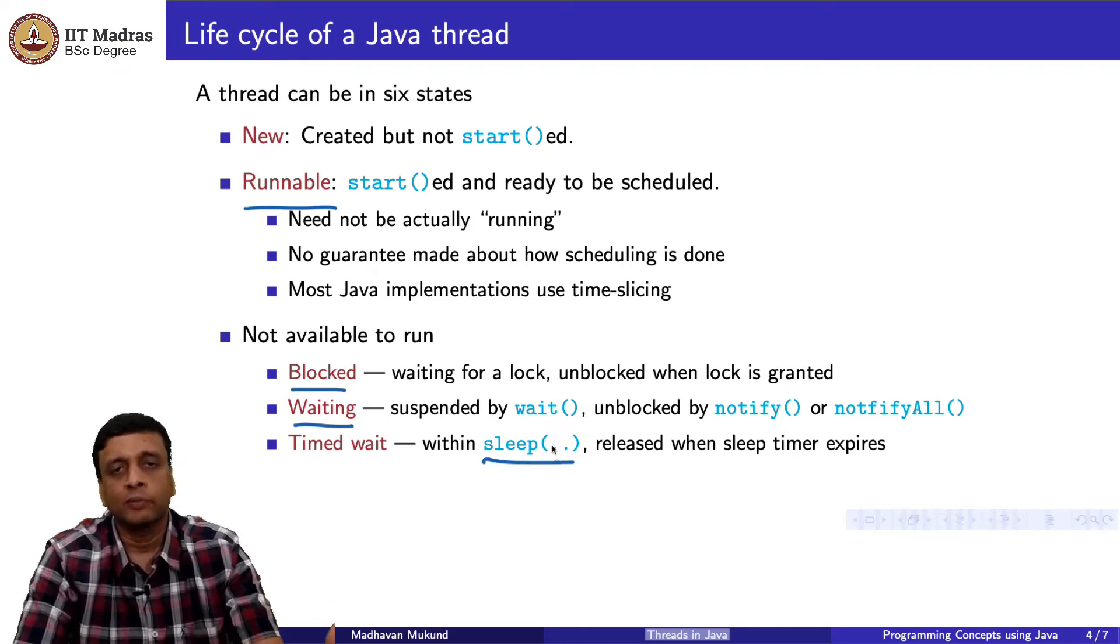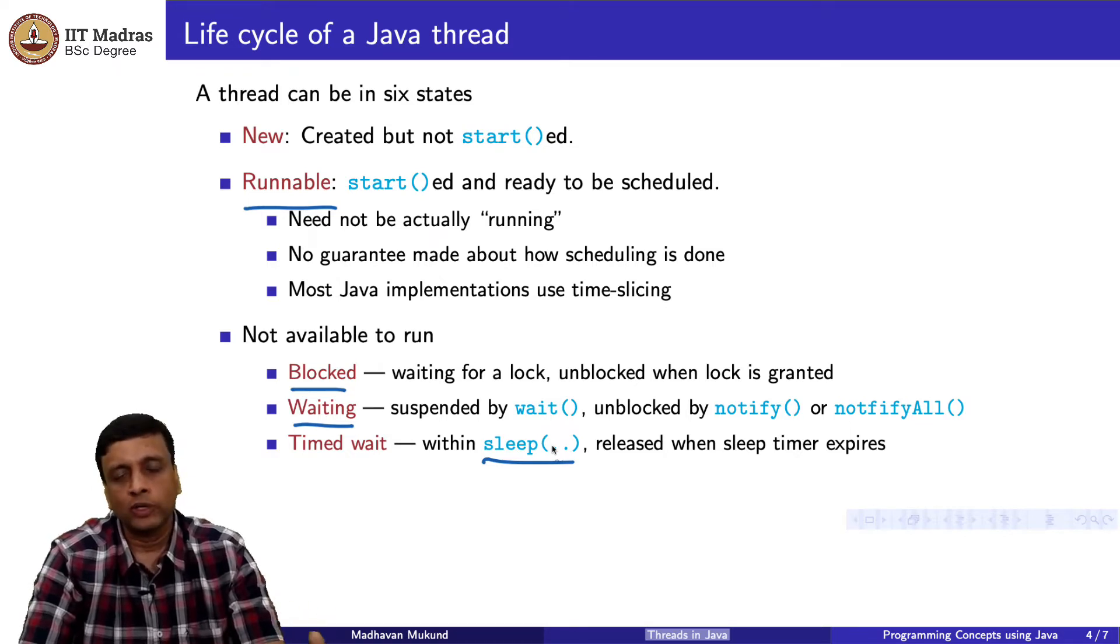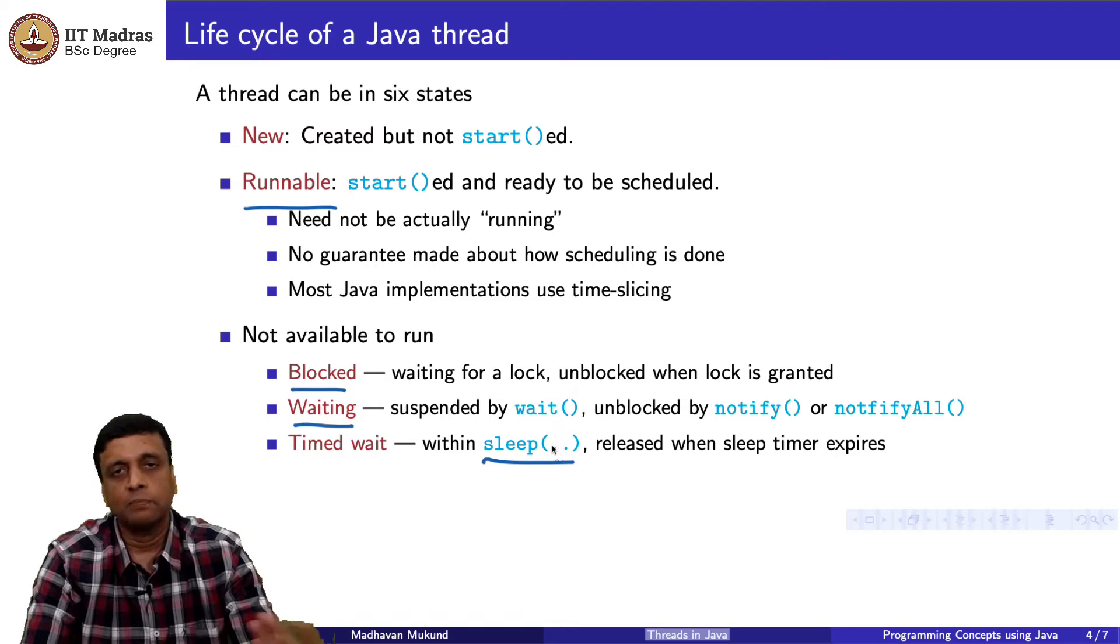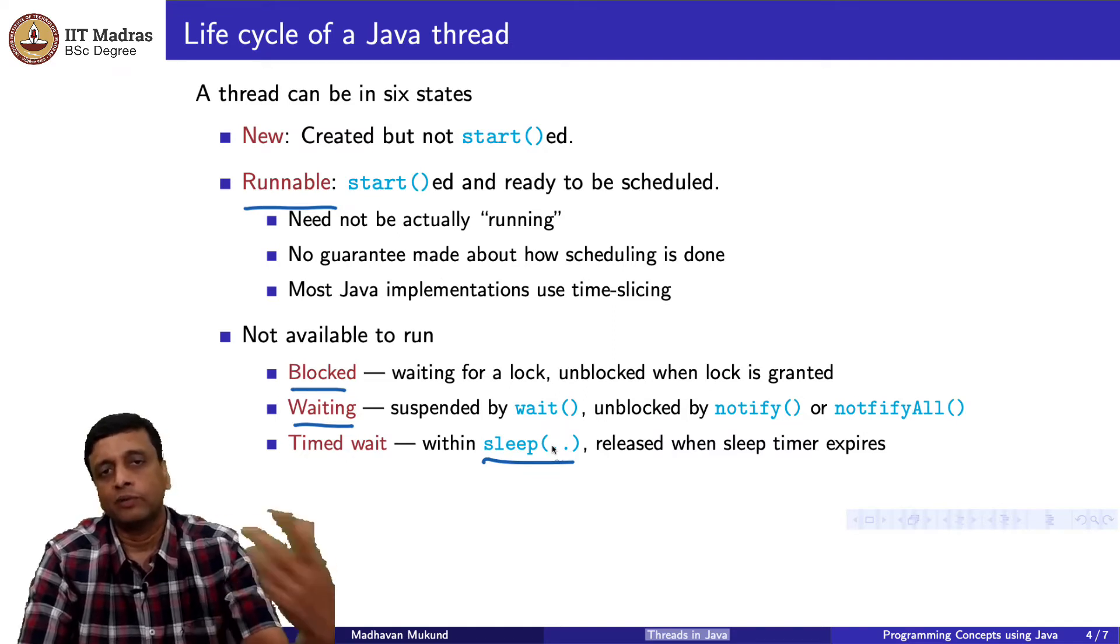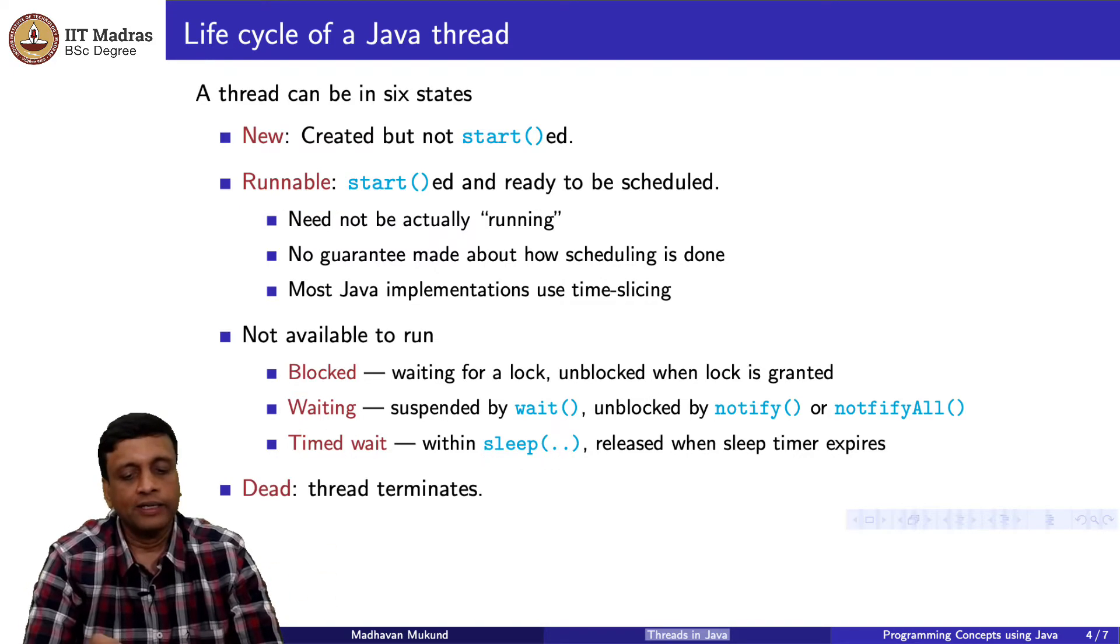And finally, we saw this sleep. You have sleep, we pass an argument which is interpreted as a length of time in milliseconds. This is also a kind of wait. The thread is suspended. It is not doing anything. But here, the suspension lasts for a fixed amount of time. It is not based on some other event happening which it cannot predict. But it knows that after a certain amount of time, there will be a signal saying come and wake up.